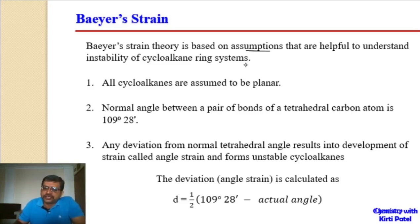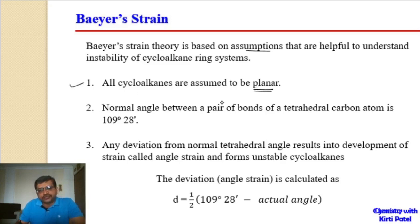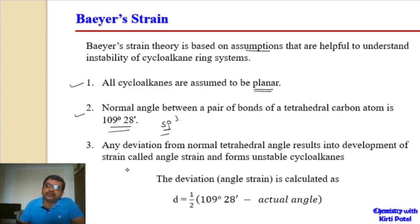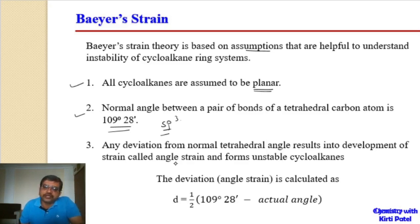Baeyer strain theory is based on certain assumptions. First, all cycloalkanes are assumed to be planar. Second, the normal angle between a pair of bonds on a tetrahedral sp3 carbon is 109 degrees 28 minutes. Third, any deviation from this normal tetrahedral angle results in development of angle strain, forming unstable cycloalkanes. The larger the angle strain, the lesser the stability of the cycloalkane.